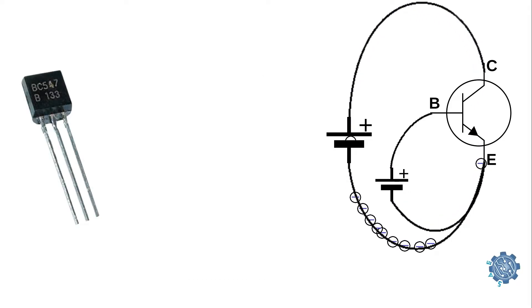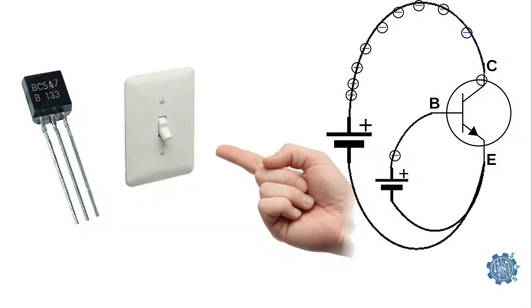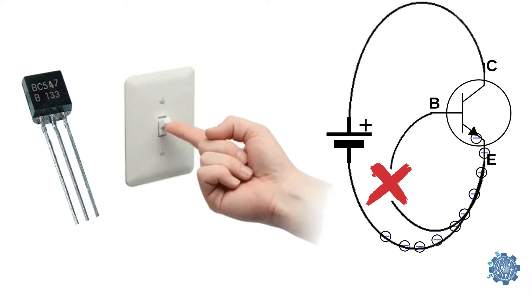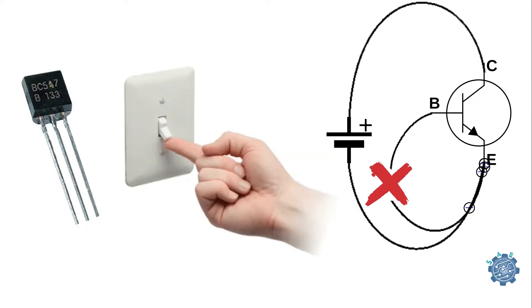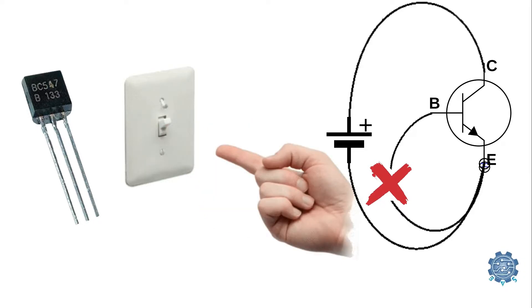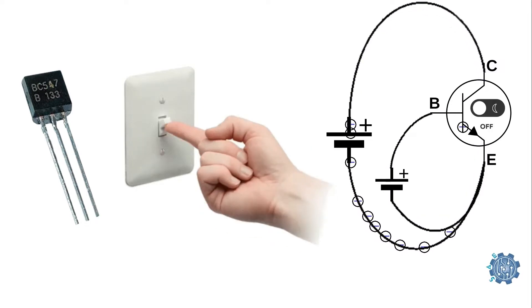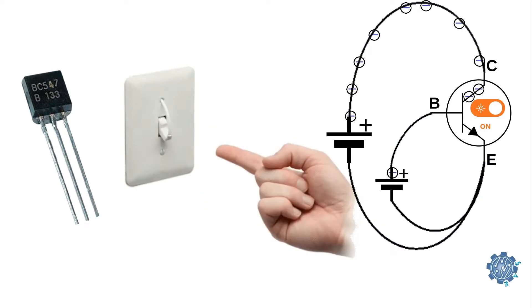A BJT can also act like a switch. When there is no current to the base, there will be no current that flows between the collector and the emitter. Turn on the base current and a big current will flow between the collector and emitter. So, the base current switches the transistor states on and off.